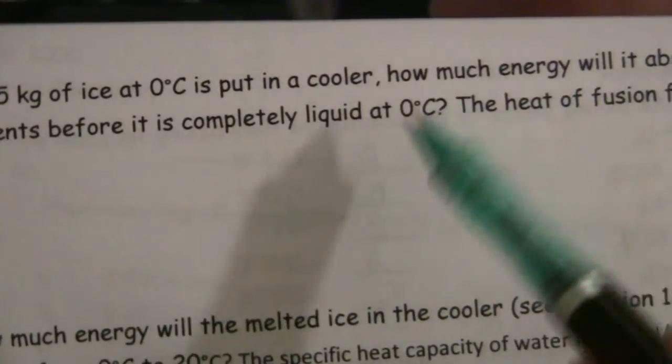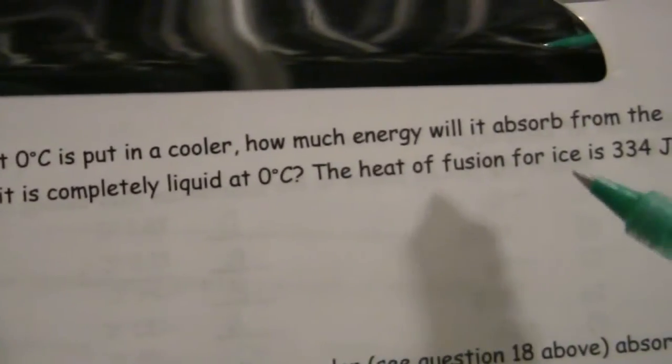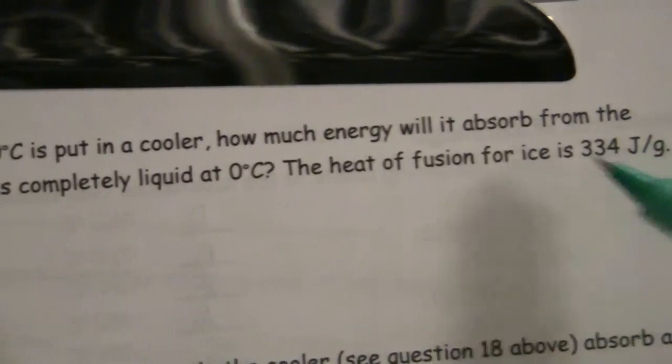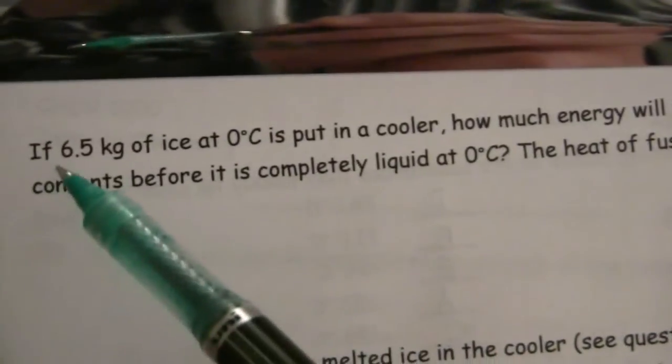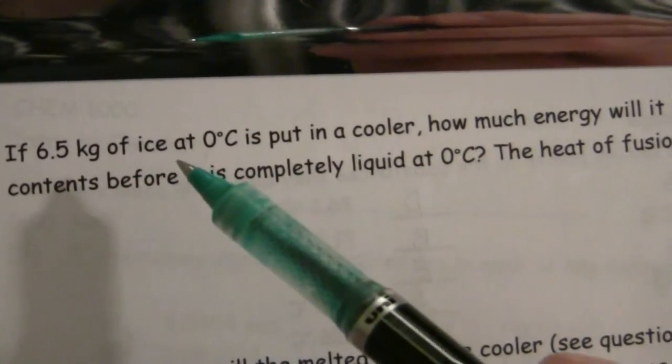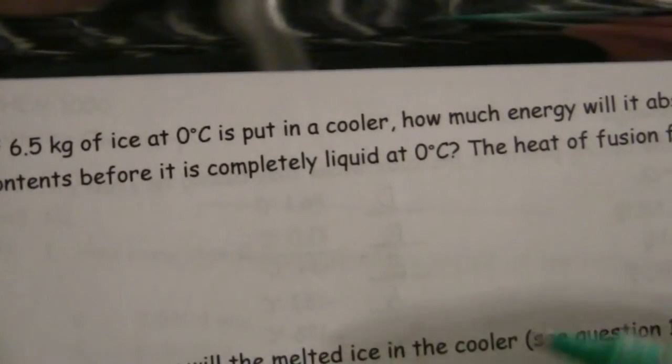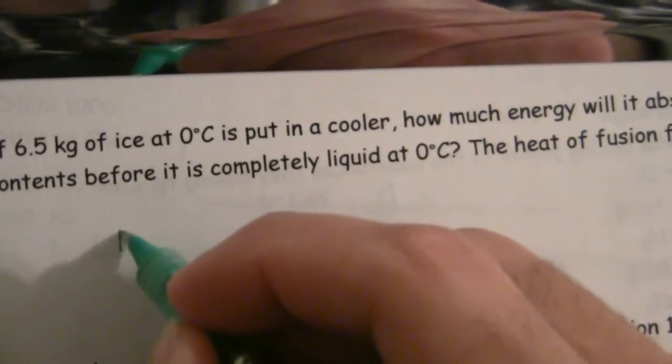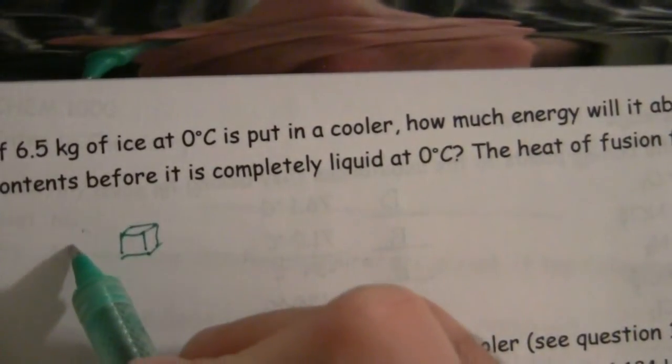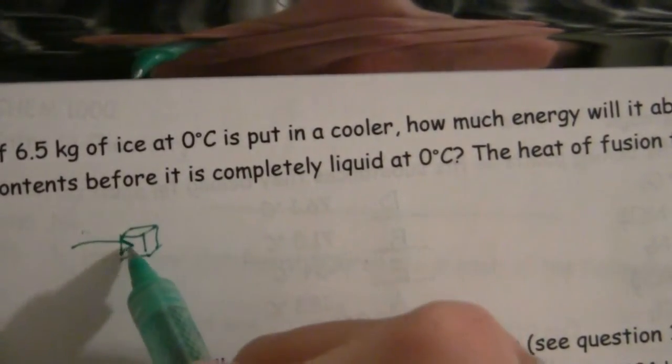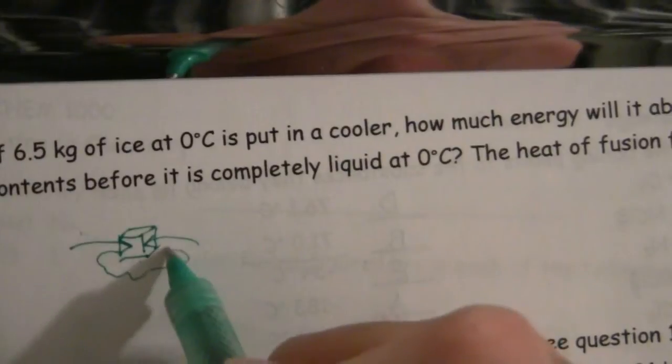Or at its melting point, however you want to look at that. So we want to know how much energy is going to be required to melt not one gram, that would be 334 joules, but 6.5 kilograms of ice. So in order for ice to melt, you have to give it energy. Here is your ice cube, if you will. So, as you put energy into that ice cube, it then begins to melt.